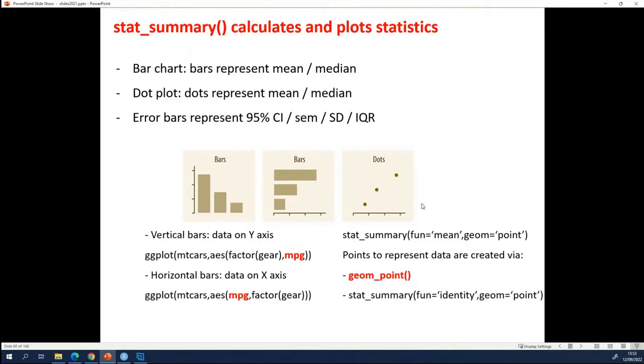The dot plot. So dot plots, if they represent statistics, use the stat summary function. Now you also have scatter plots, which are also essentially dot plots. But in scatter plots, you typically want to show the data and not statistics.